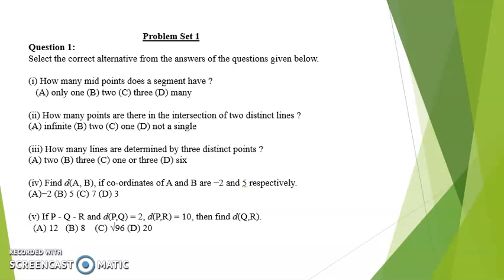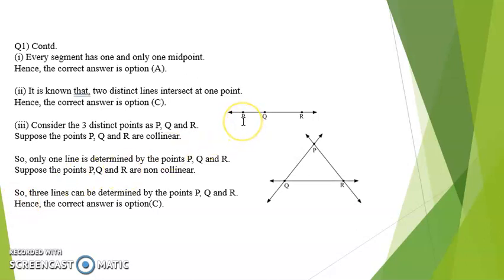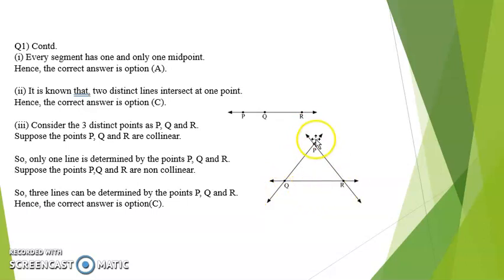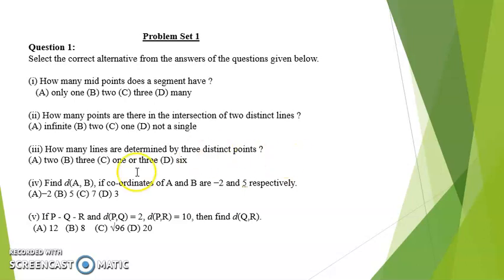Third one. How many lines are determined by three distinct points? If we take three distinct points P, Q, R and they are collinear, when we join these points we get one single line. That is case 1. Case 2: if the points are non-collinear, then when we join them, we get three separate lines. So the answer is option 3: 1 or 3.